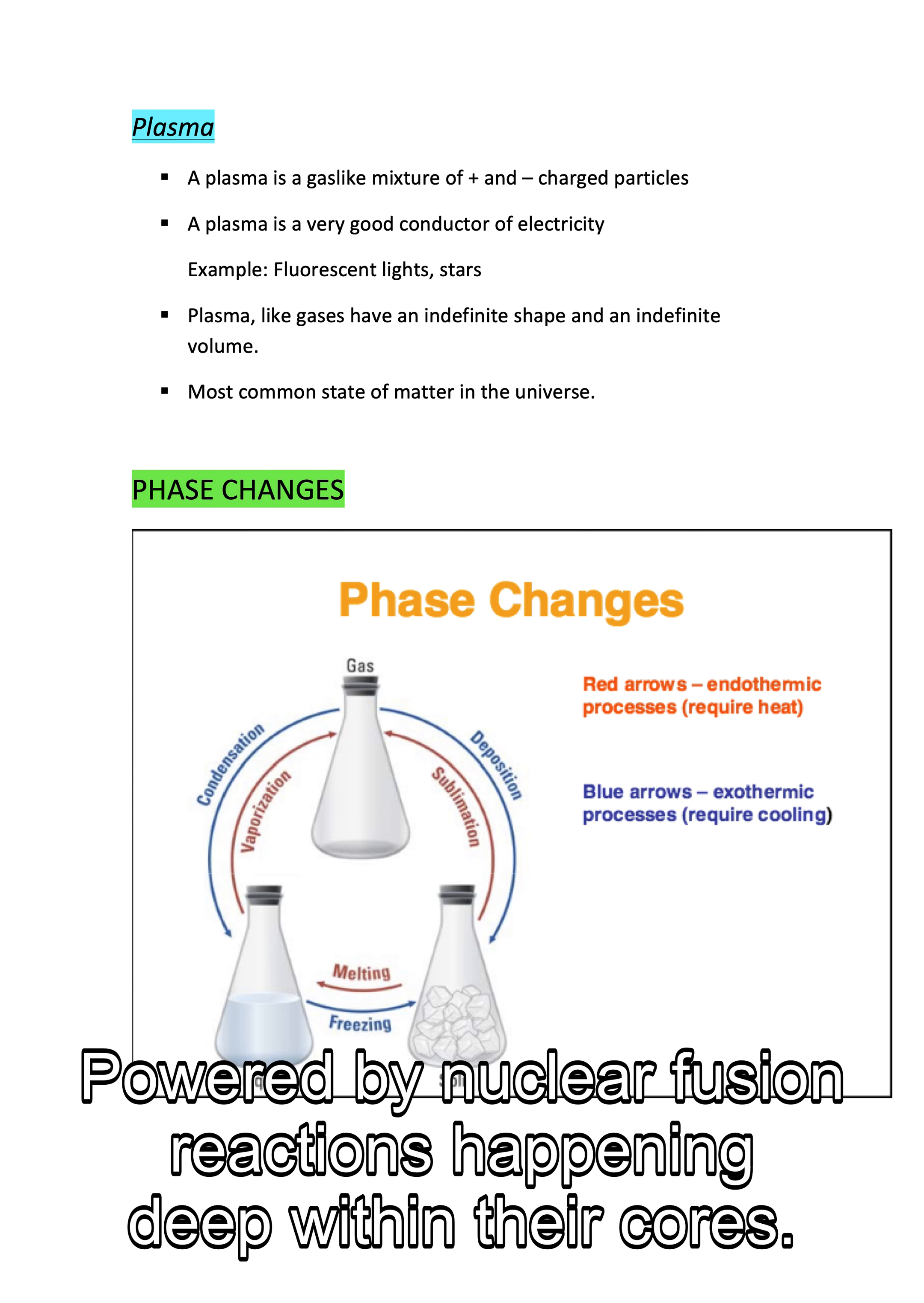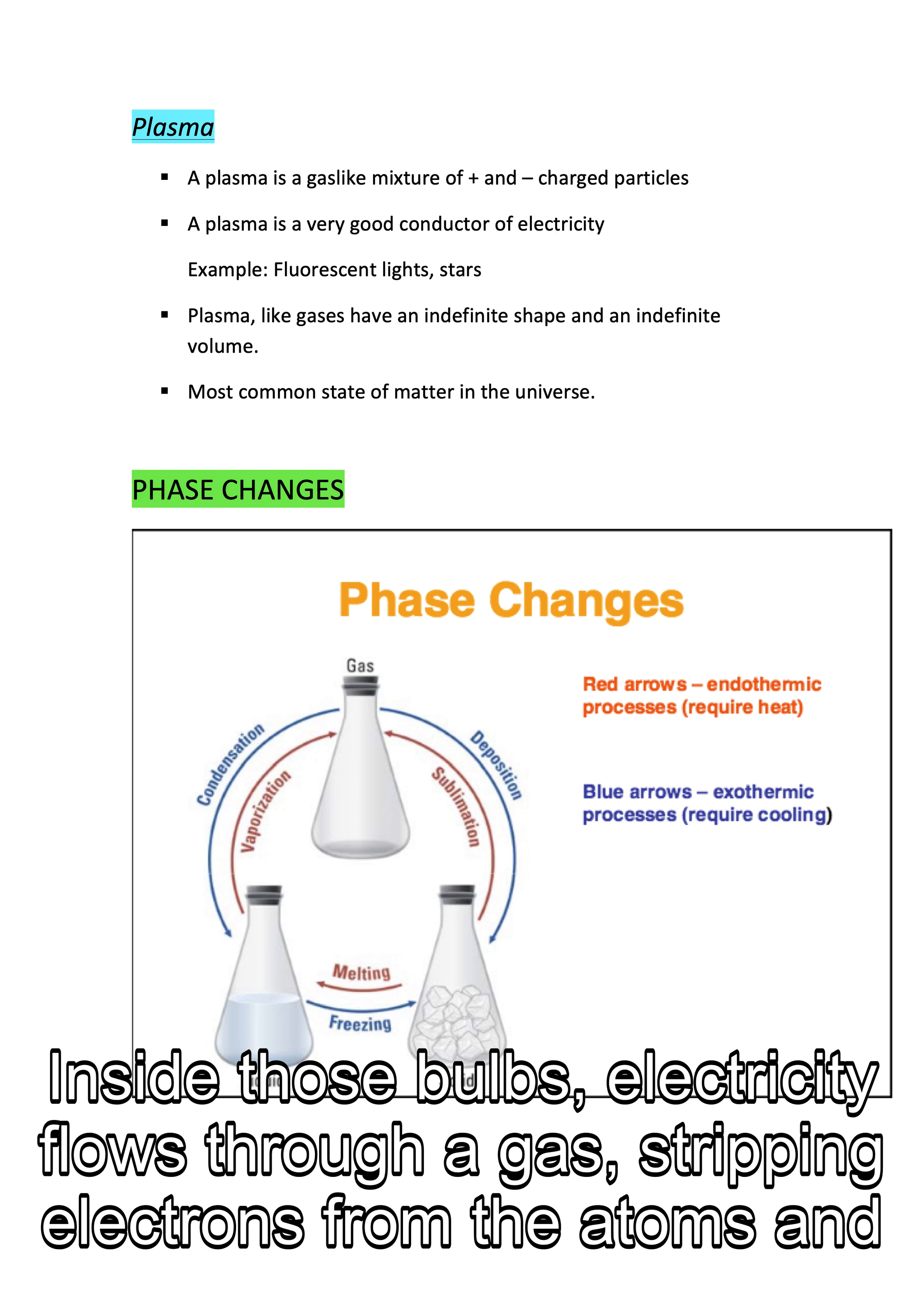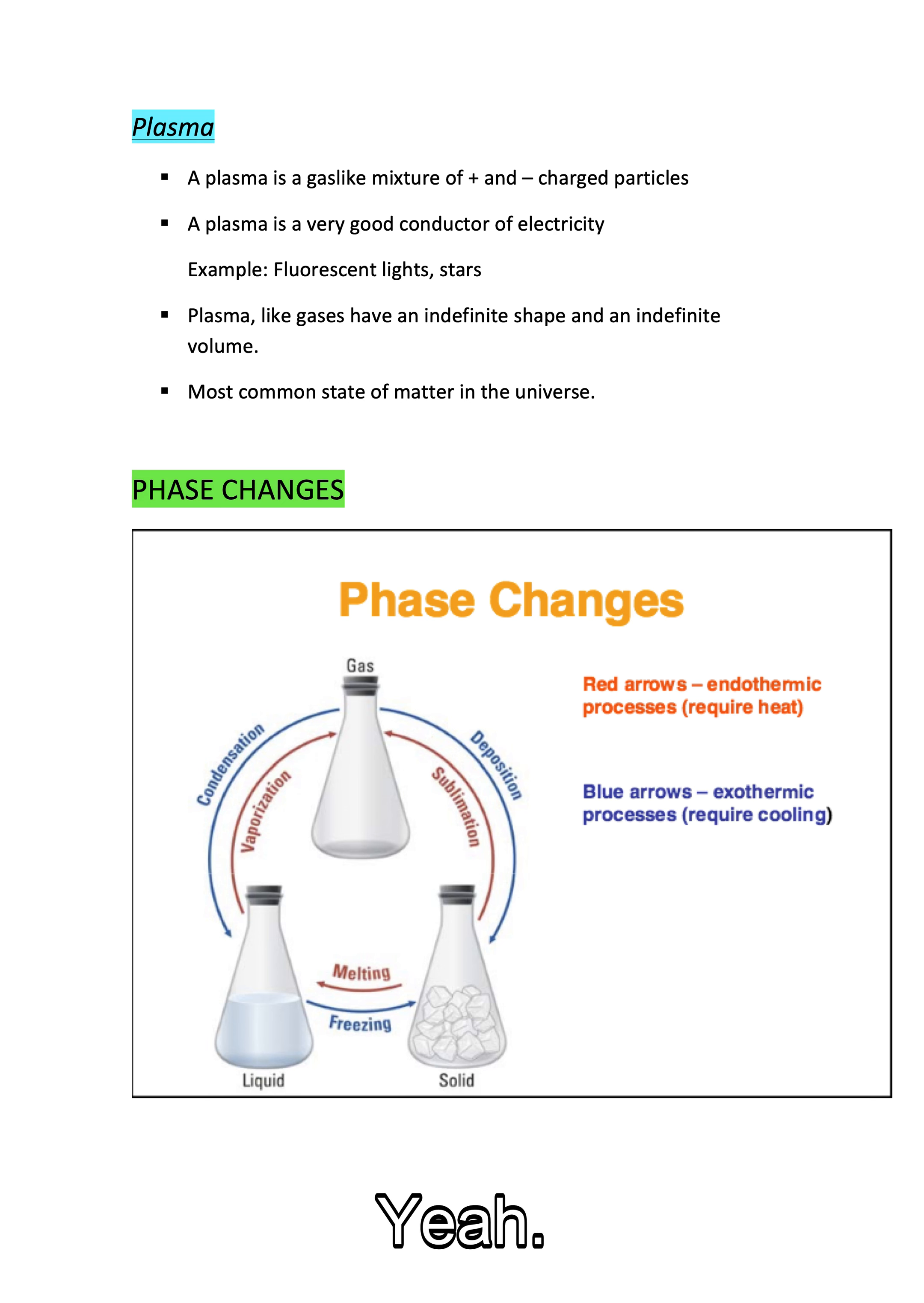Stars are basically giant balls of plasma, powered by nuclear fusion reactions happening deep within their cores. And closer to home, you actually see plasma every time you turn on a fluorescent light bulb. Those everyday light bulbs contain plasma. Inside those bulbs, electricity flows through a gas, stripping electrons from the atoms and creating a plasma, and it's that plasma that emits the light we see.